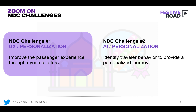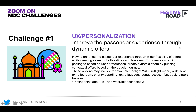I will specifically focus on the new distribution capability challenges that we have built. We have two challenges. The first one will be focusing on user experience and personalization. The second one will be focusing on artificial intelligence and personalization. Let's take a look at the first one. What we are asking you is to improve the passenger experience through dynamic offers. Your mission, if you pick this challenge, will be to enhance the travelers' experience by providing them with flexible options to personalize their trip. Airlines can showcase their products and services while allowing passengers to receive offers that are spot on and useful to them.